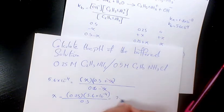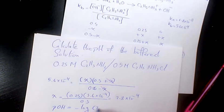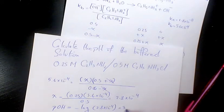That's gonna be 2.8 times 10 to the power of negative 4. So pOH will be negative log 2.8 times 10 to the power of negative 4. That would be 3.55.